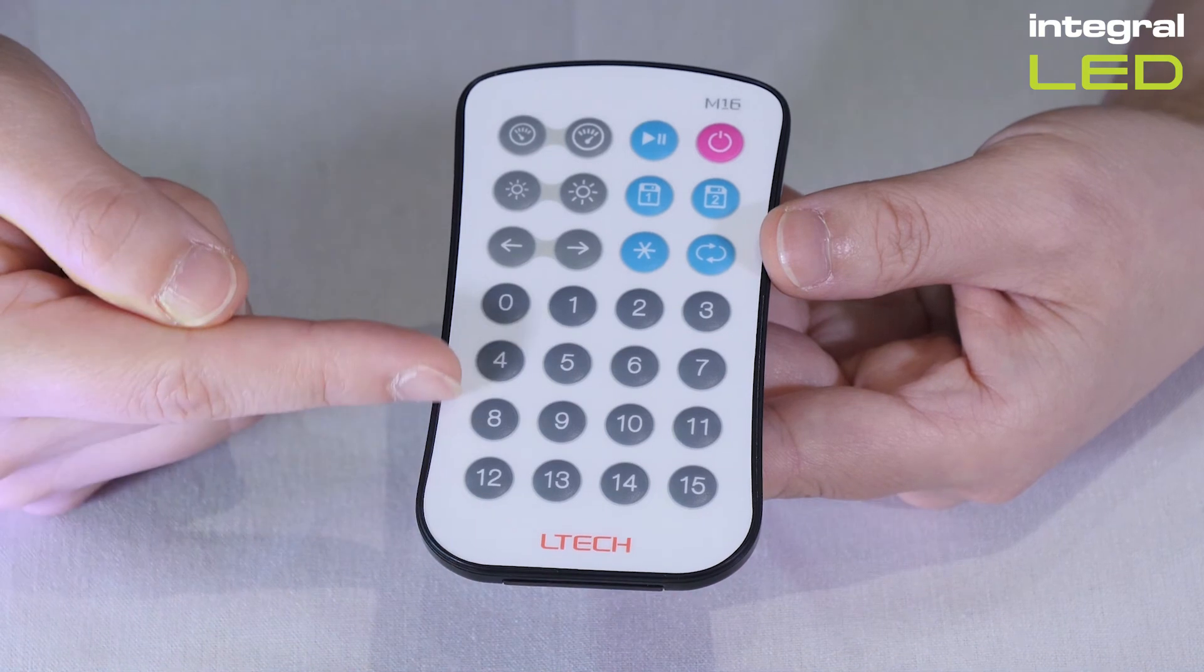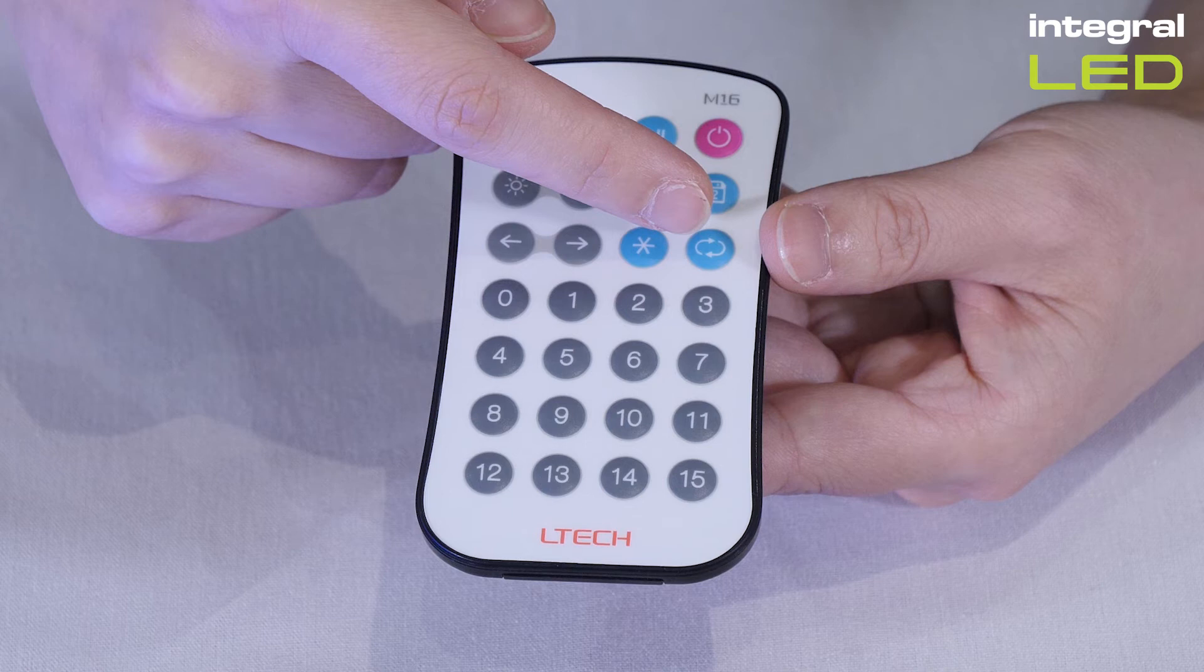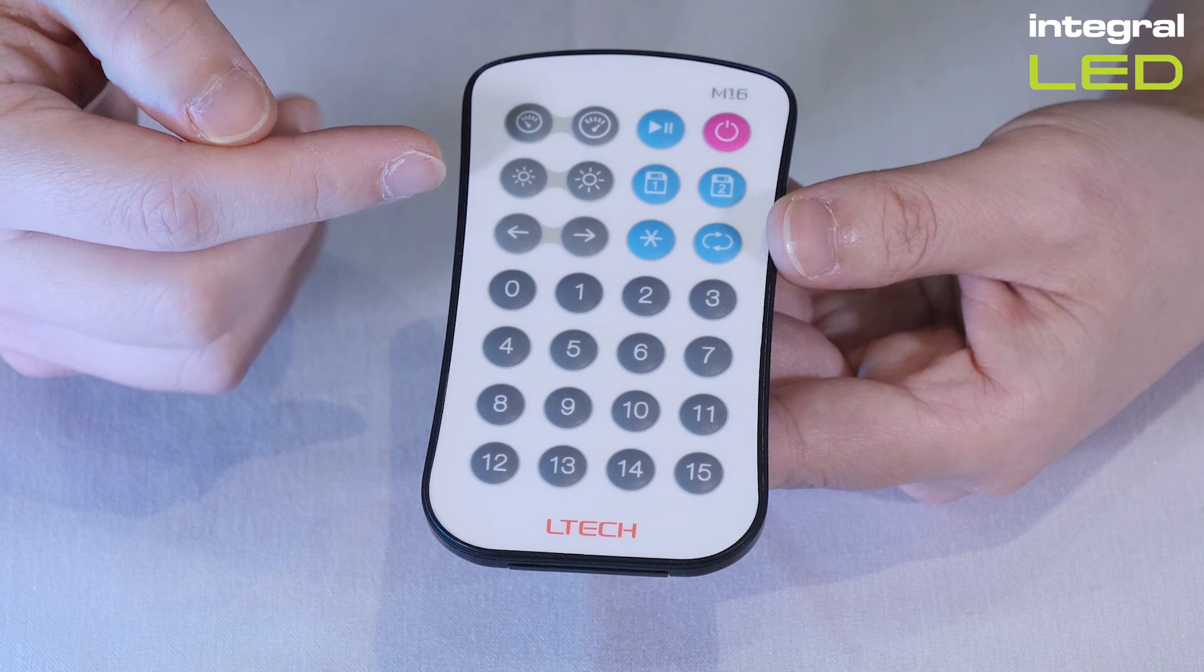The number buttons, 0 to 15, select the pre-programmed light effect. This button runs all 16 of the lighting effects in a looping cycle. All effects can be altered using the speed, brightness, and direction buttons.